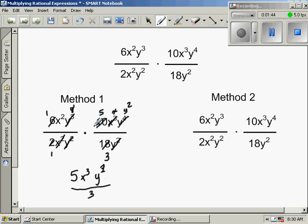Now this method you have to be really neat with. Now there's another method you can just go ahead and multiply across. So if I do that, I get 60, x to the fifth, y to the seventh. And then on the bottom I have 2 times 18, which would be 36, x to the second, y to the fourth.